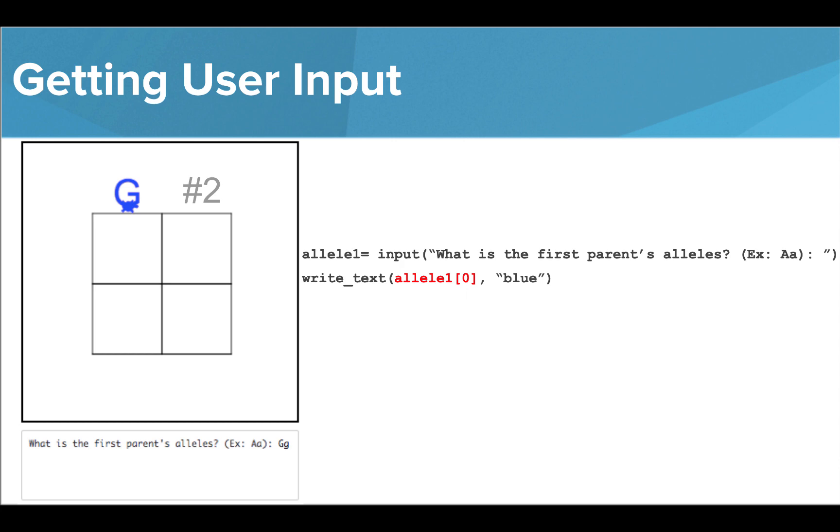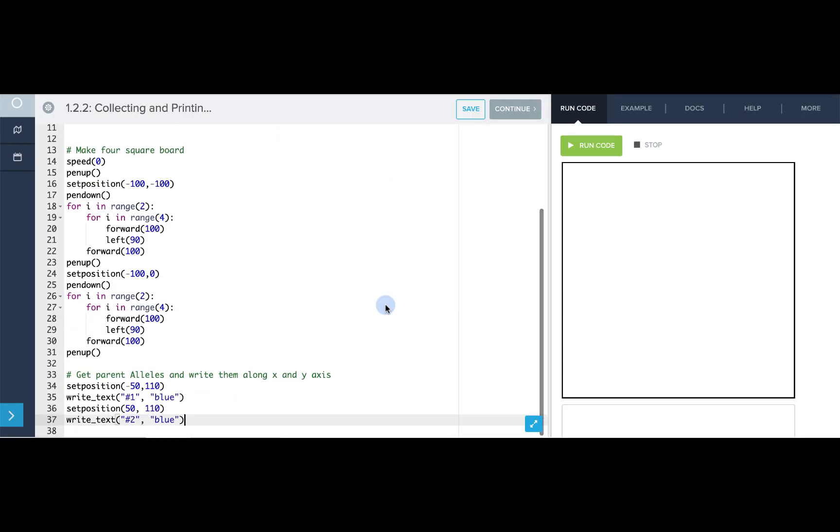Let's go to the editor to print the second letter to position two. After Tracy gets to position negative 50, 110, I want to ask the user for the allele pair so I can write their letters on top of the boxes in my Punnett square. I'll use the variable name allele one and then use the term input to get input from the user. I'll write my prompt inside quotes. What is the first parent's alleles? Let's also give an example so they know how I want it to be written. And I'm going to make sure I put a space before I close my quotation marks and my parentheses. Now that I've saved this information, I'll use it to print the allele values to the screen.